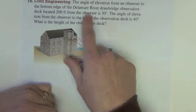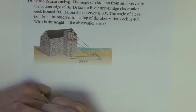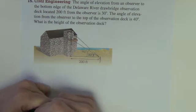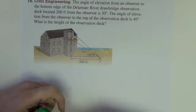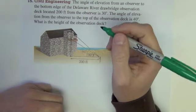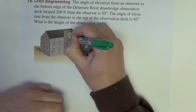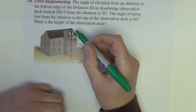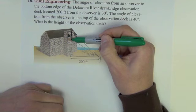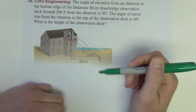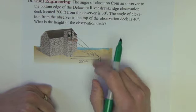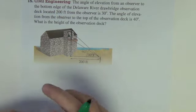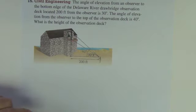The angle of elevation from an observer to the bottom edge of the Delaware River drawbridge observation deck located 200 feet from the observer is 30 degrees. The angle of elevation from the observer to the top of the deck is 40 degrees. What is the height of the observation deck? Okay, so we are looking for the height of the deck which is right here. The height of the deck is the distance from the bottom of the deck to the top of the deck. That's what we want. That side lives in a triangle that is not a right triangle and therefore right now we cannot solve it with that triangle.